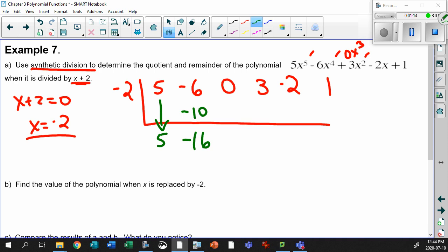So we're starting to get into some big numbers here. Minus 16 times minus 2 is positive 32. 32 plus 0. Multiply that by minus 2, you got minus 64. Add that one in there, you get minus 61. Minus 61 times minus 2 is 122. Add that together, that's 120. Then 120 times minus 2 is minus 240. Add that together, you have minus 239 remainder.